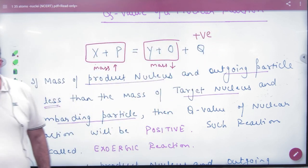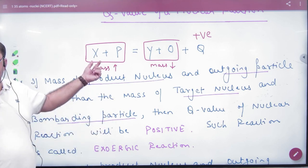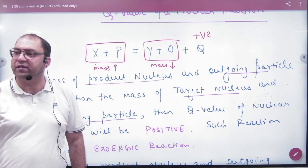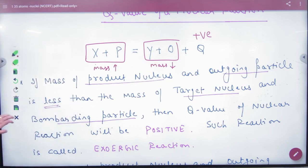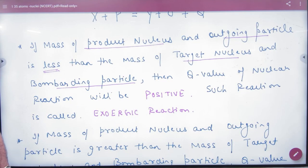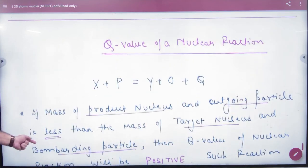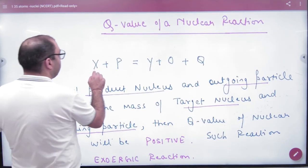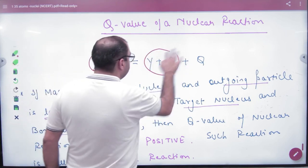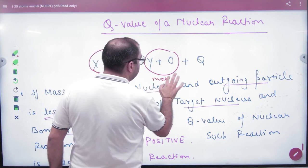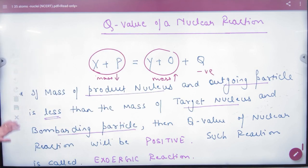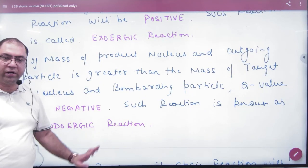Positive. If your reactants' mass is bigger and the products' mass is smaller, then Q value will be positive, meaning energy is released in the process — we call this an exoergic reaction. But if the reactant mass is smaller than the product mass, then Q value will be negative, and this is called an endoergic reaction.